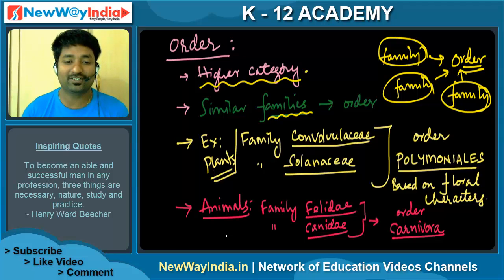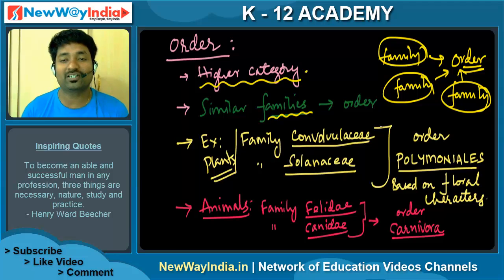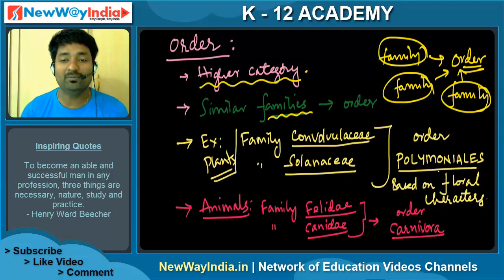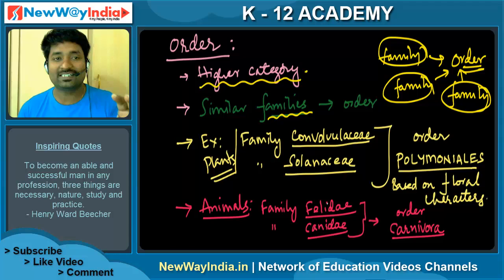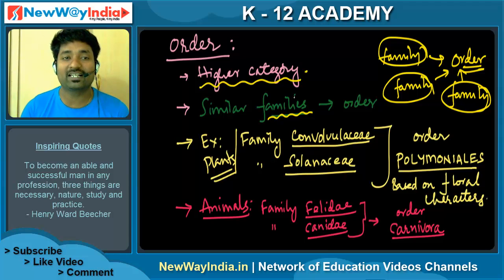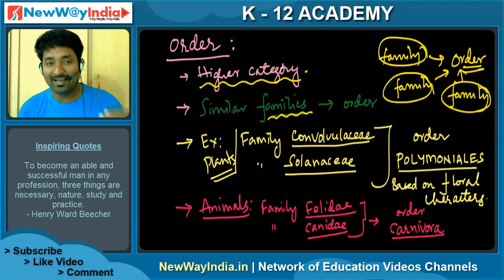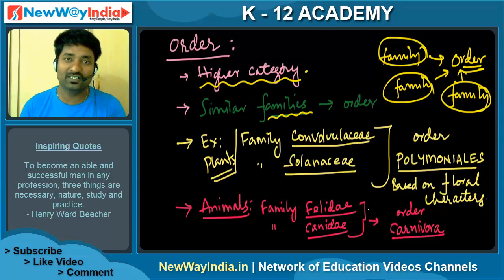For example, in plants, family Convolvulaceae and family Solanaceae are two entirely different families, but both come under order Polemoniales, based on floral characters. Similarly, in animals, family Felidae and family Canidae are included under order Carnivora. So, order is a combination of families. That is the kind of question you will get from an application point of view.